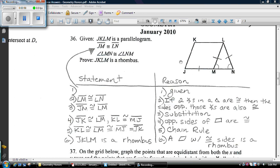This side is congruent to this side, and this side is congruent to this side, because you know it's a parallelogram. Then, I just use the chain rule. And finally, JKLM is a rhombus, because a parallelogram with congruent sides is a rhombus.